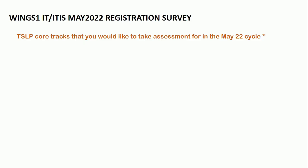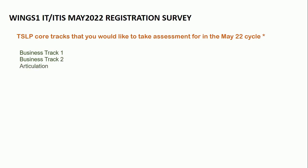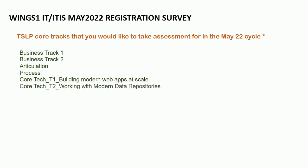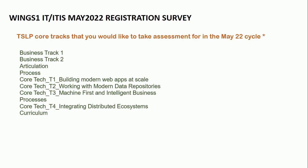For Wings 1, this is the May 2022 Registration Survey. First of all, you have to select the TSLP core track that you would like to take assessment for in the May 2022 cycle. There are many options: Business Track 1, Business Track 2, Articulation, Process, Core Tech T1 - Building Modern Web Apps at Scale, Core Tech T2 - Working with Modern Data Repositories, Core Tech T3 - Machine First and Intelligent Business Processes, Core Tech T4 - Integrating Distributed Ecosystem Curriculum.